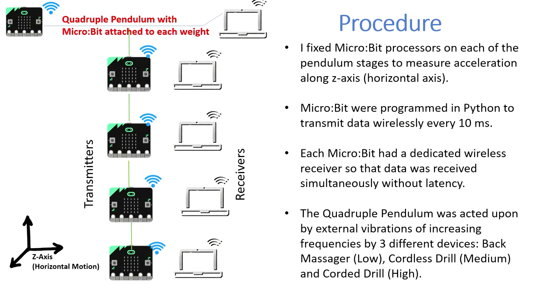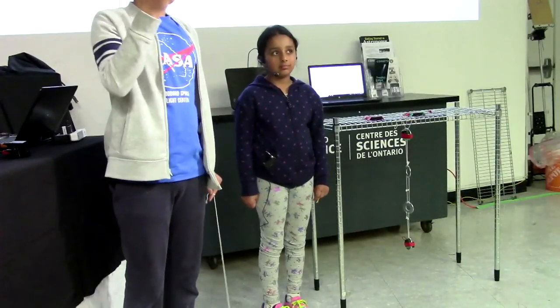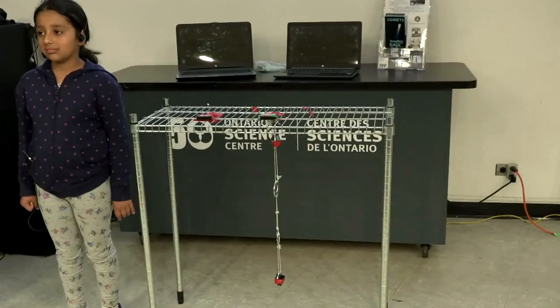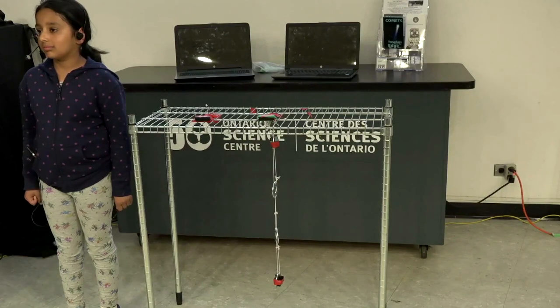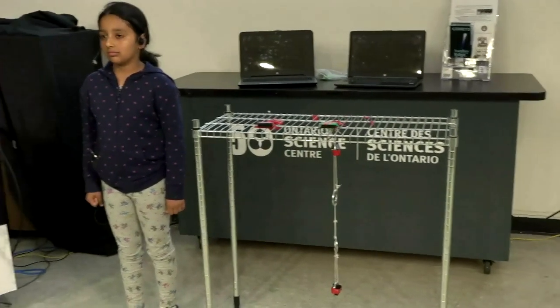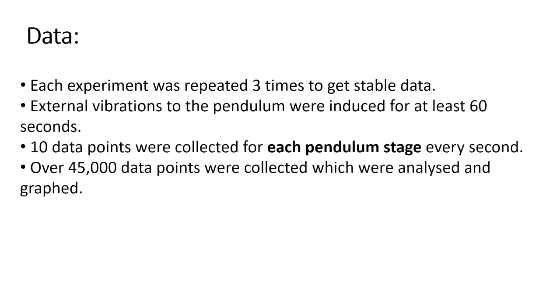We also have a micro:bit accelerometer on top of the pendulum to measure the vibration being input before it gets reduced by the pendulum. We wanted to simulate three different types of frequencies on our model. First, a back massager placed on top of the metal grating — back massagers tend to have lower frequencies. Second, a cordless drill running on battery, which has a medium frequency. Third, a corded drill, which had the maximum frequency. For each tool, we repeated the experiment three times for 60 seconds each to get accurate data.